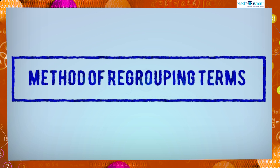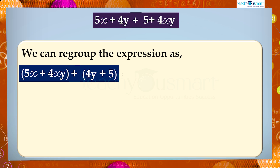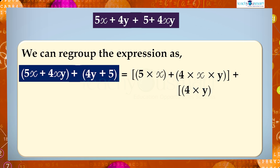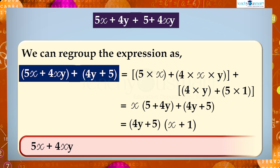Now it is easy to factorize the given expression, and this factorization is done by the method of regrouping terms. We can also regroup the expression in another way. Therefore, we can write 5x + 4xy + 4y + 5 equals (4y + 5) multiplied by (x + 1).